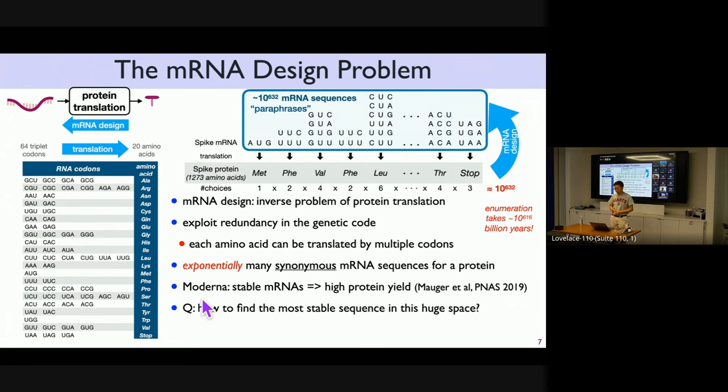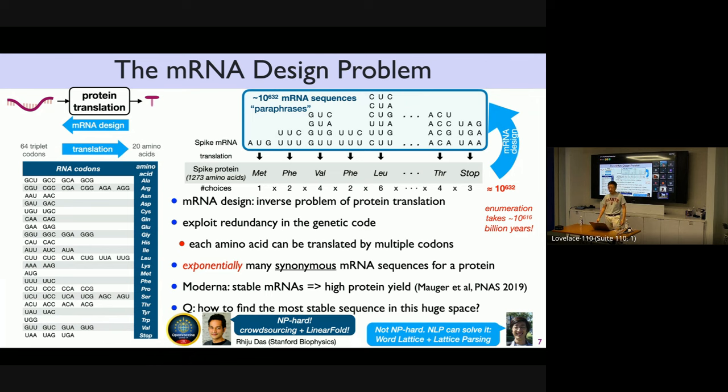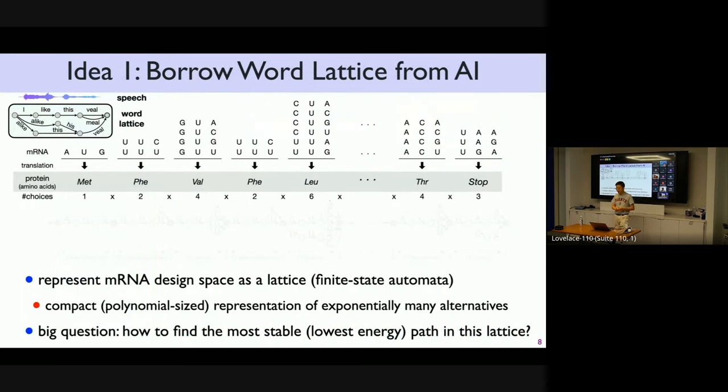Which ones do you prefer? Moderna published a paper right before the pandemic in December of 2019, PNAS, suggesting that you wanted the most stable mRNA. Because the more stable, it lasts longer. It produces more protein, which is very intuitive. But the real question is, how? How do you find the more stable or most stable one in this huge space without enumerating it one by one?